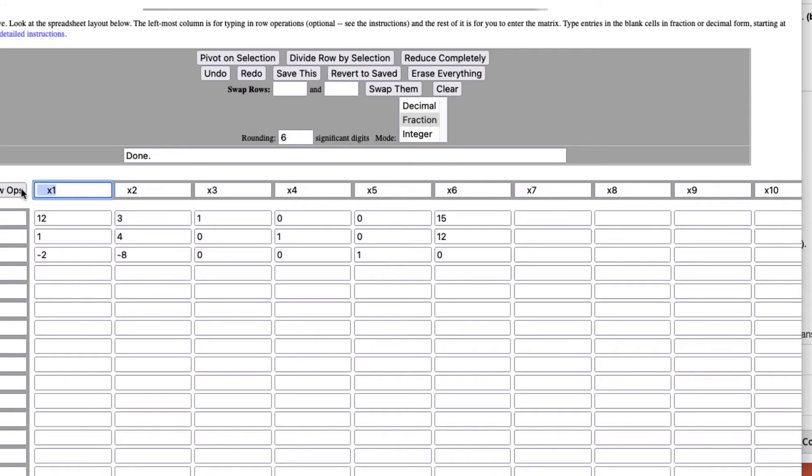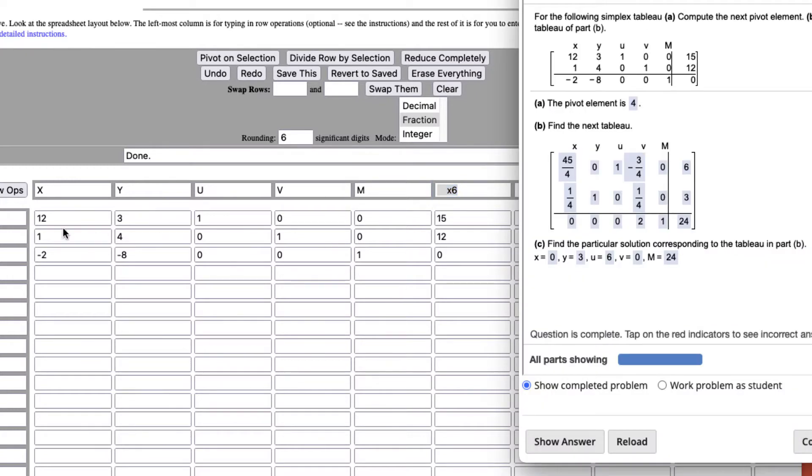And if we want, we can change these to x, y, u, v, m. Okay, and then just leave that one as the last column. And then you put the rest of them in.